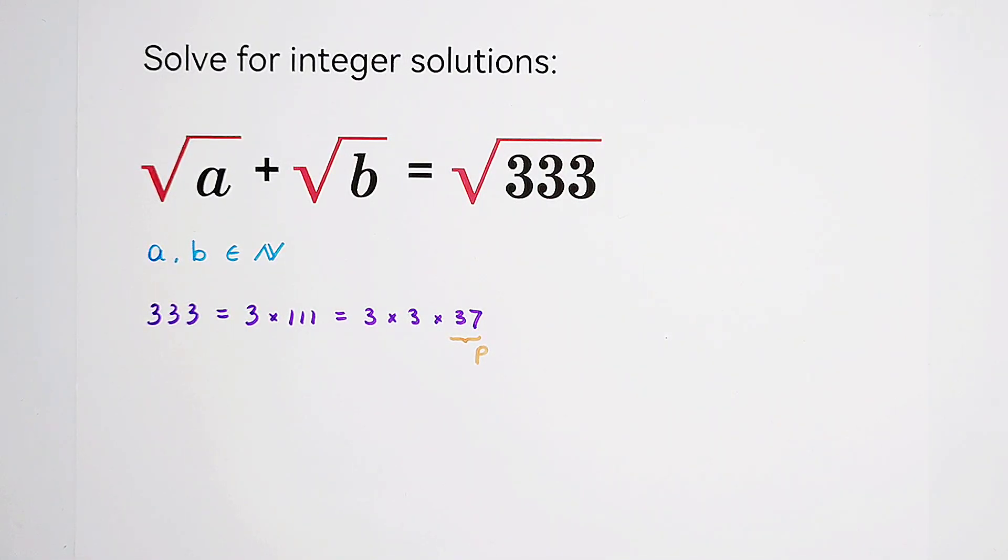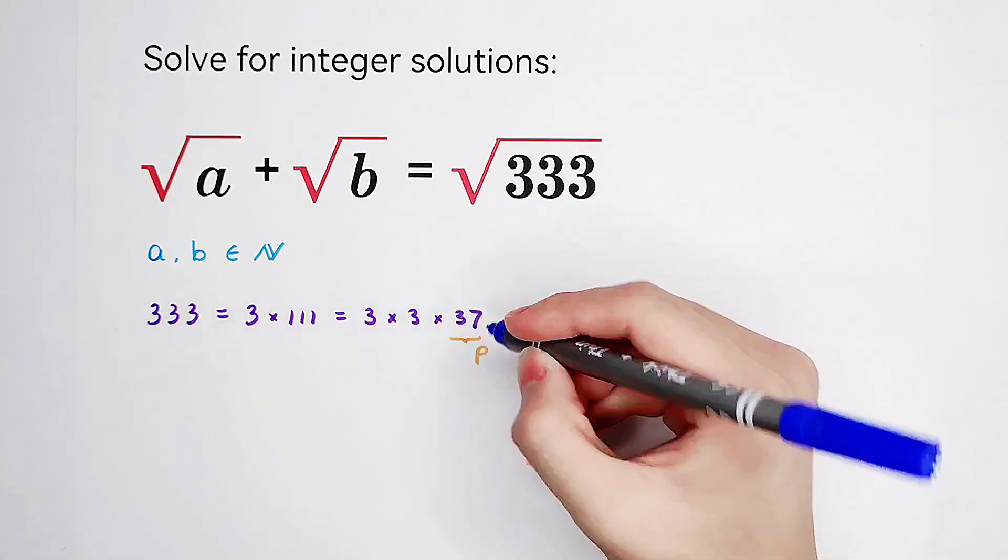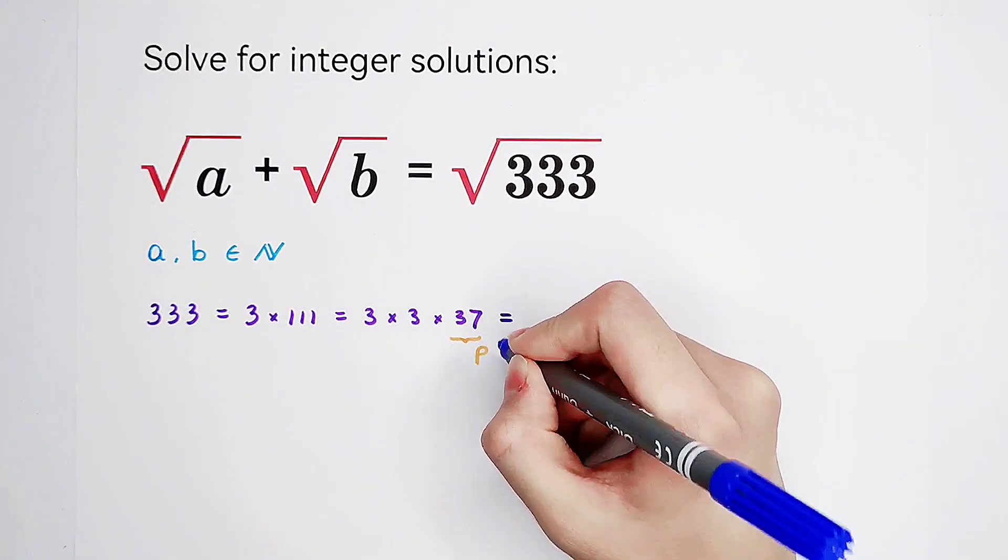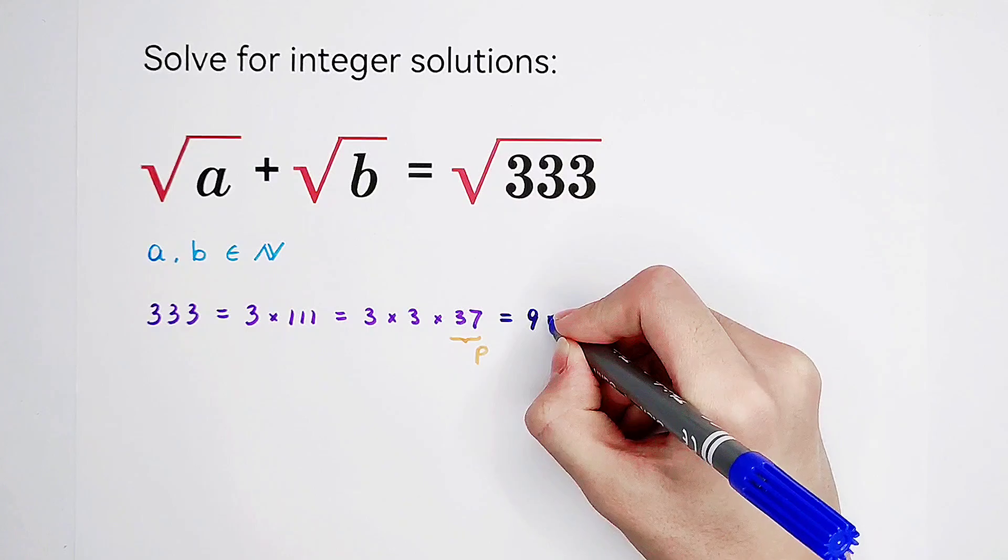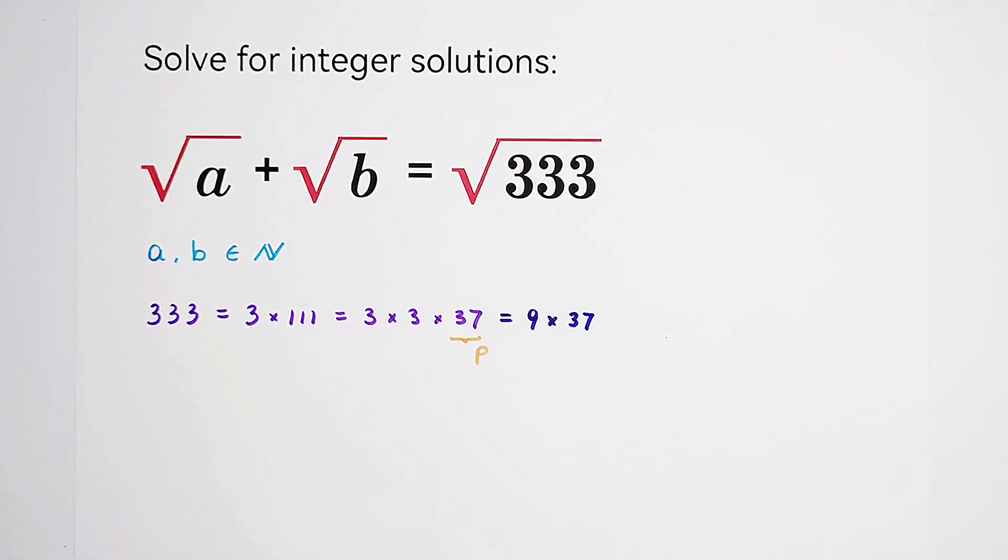So now, 3 times 3 is, of course, 9. So this number 333 can be written as 9 times 37. And we know that 9 is a square number. It is 3 squared.